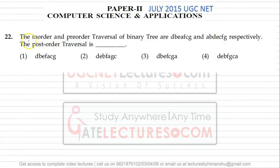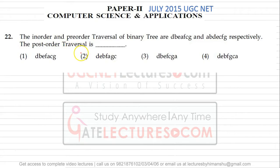In question number 22, we have the in-order and pre-order traversal of a binary tree. You need to find out the post-order traversal. You can always find the unique binary tree from the in-order and pre-order traversals.